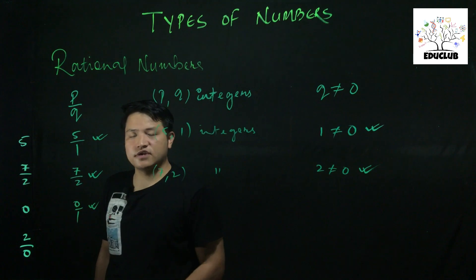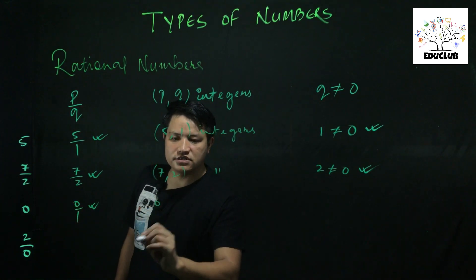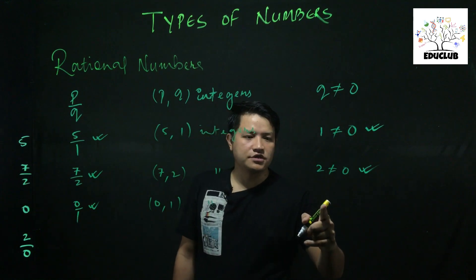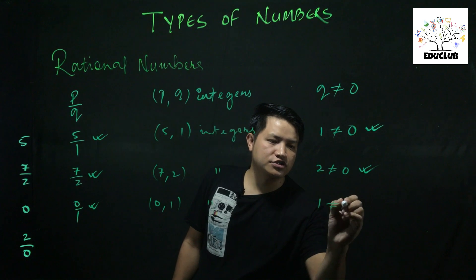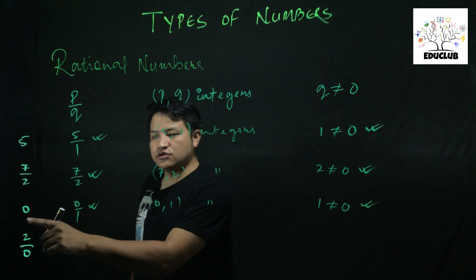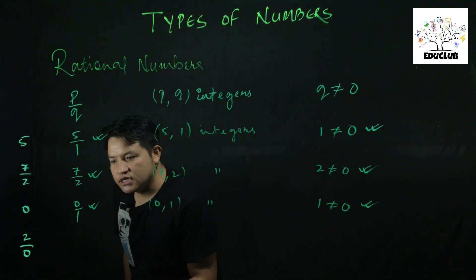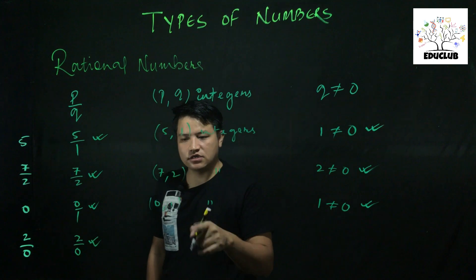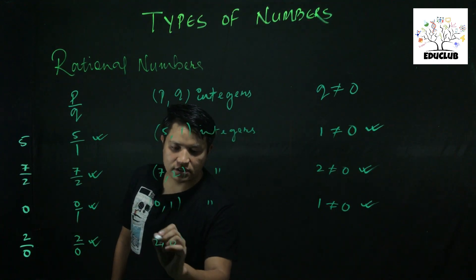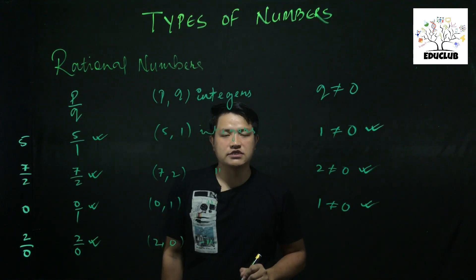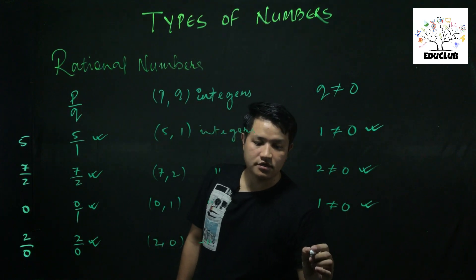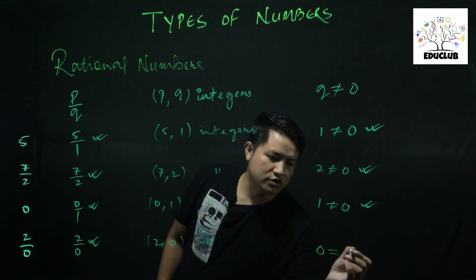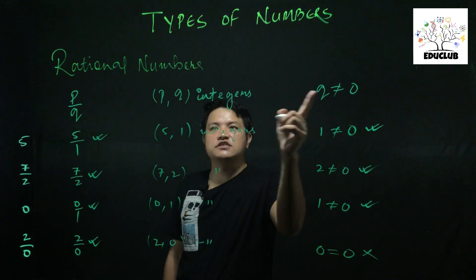Now let's check zero. Zero can be written as 0 by 1. First condition satisfied — p by q form. Second condition: 0 is an integer, 1 is an integer — satisfied. Third condition: denominator 1 is not equal to zero — satisfied. So zero is a rational number. For 2 by 0: first condition satisfied, second condition — 2 and 0 are integers — satisfied. But third condition: denominator is zero, which equals zero, so q equals zero. Third condition NOT satisfied — 2 by 0 is not a rational number.